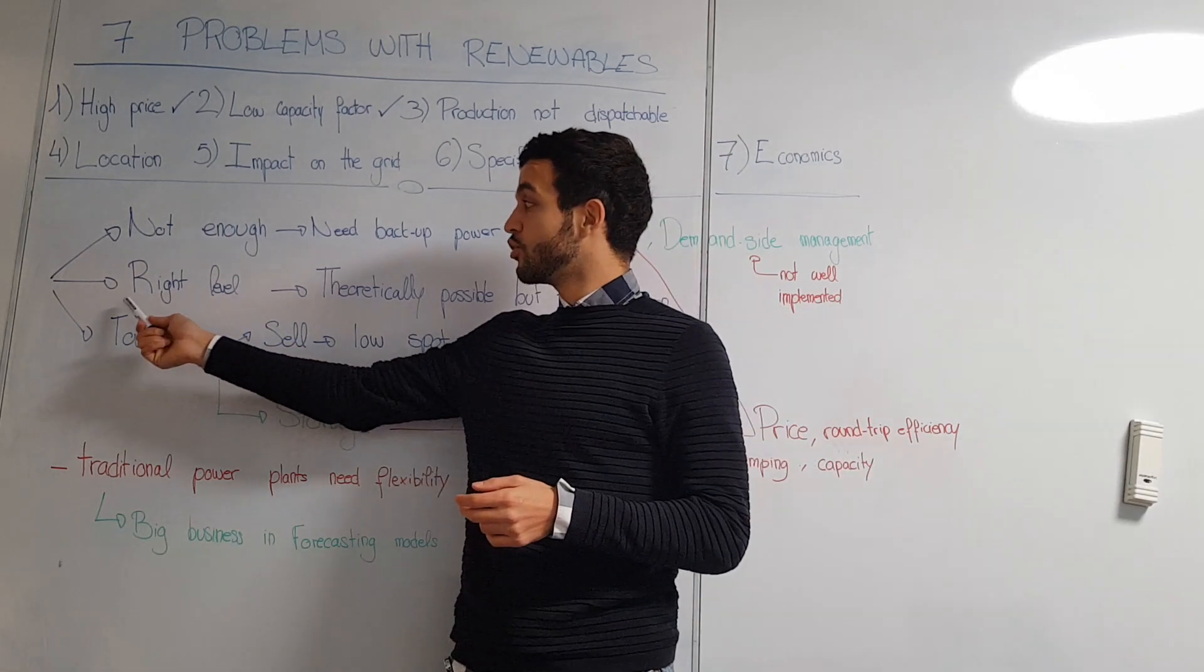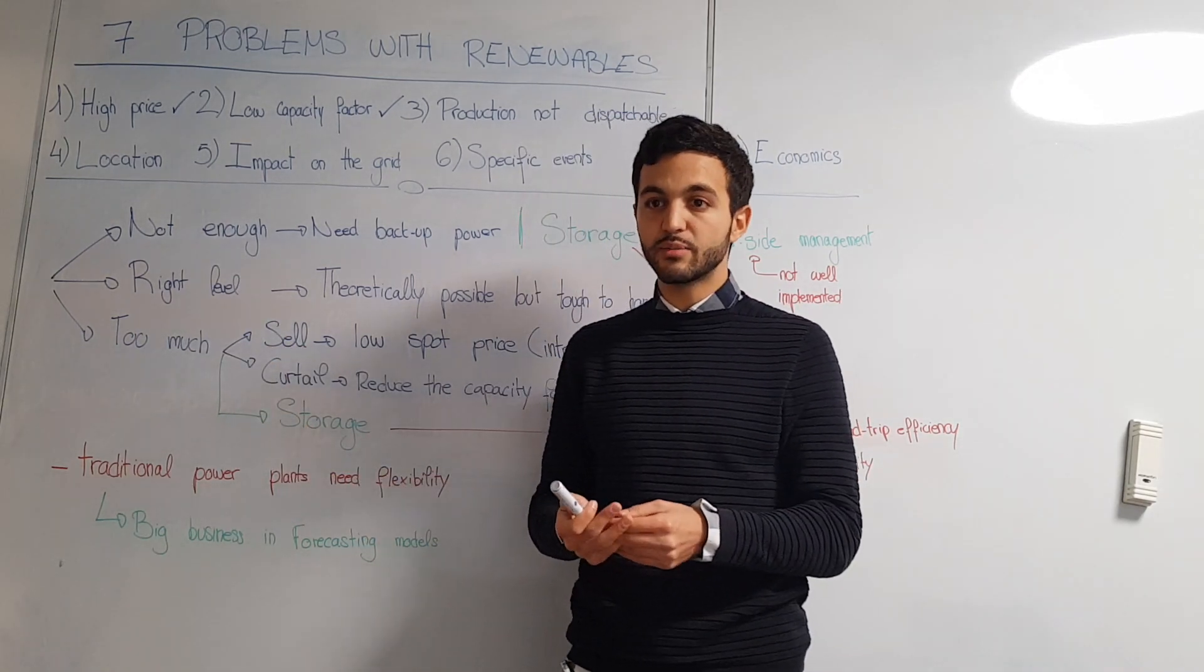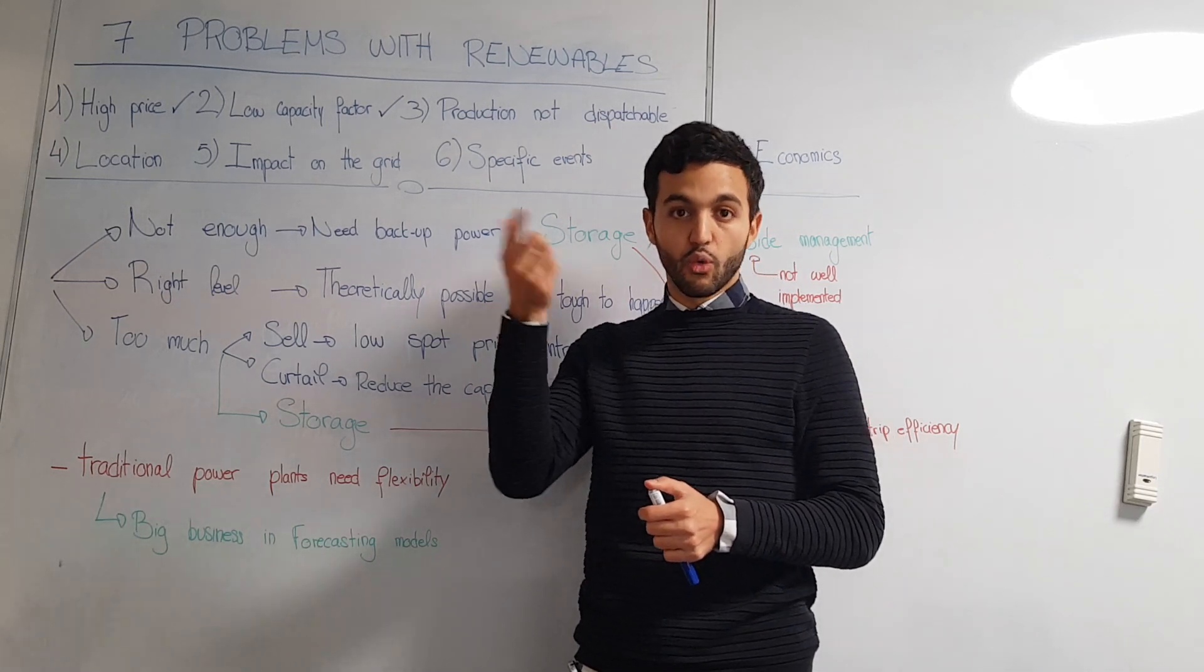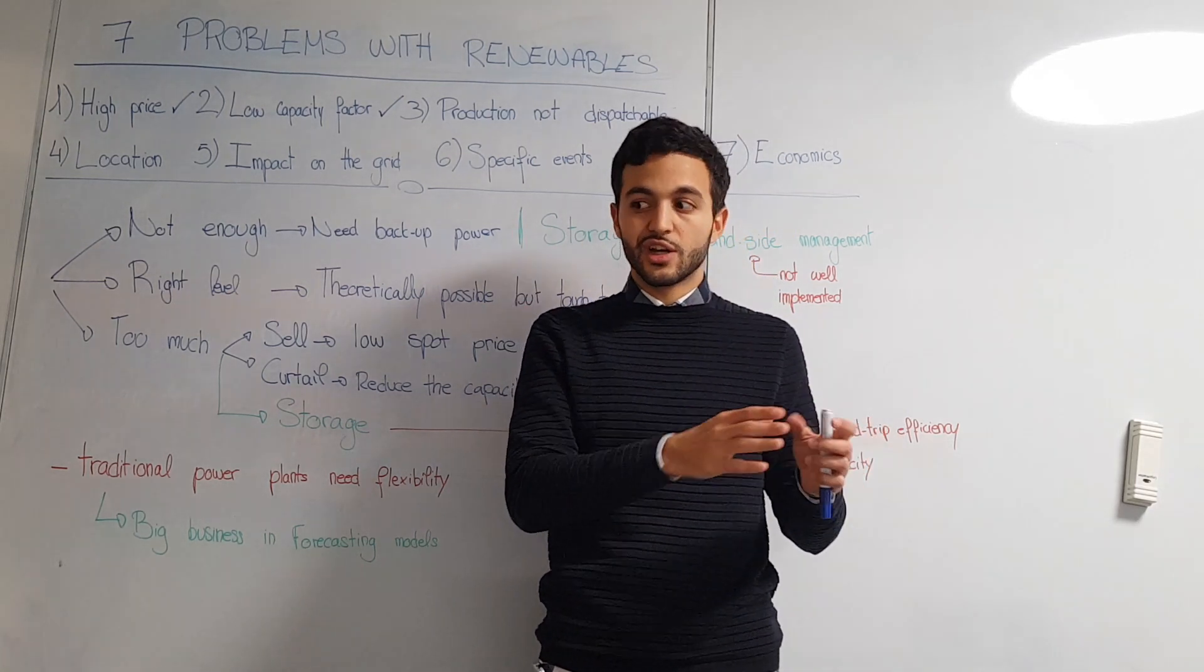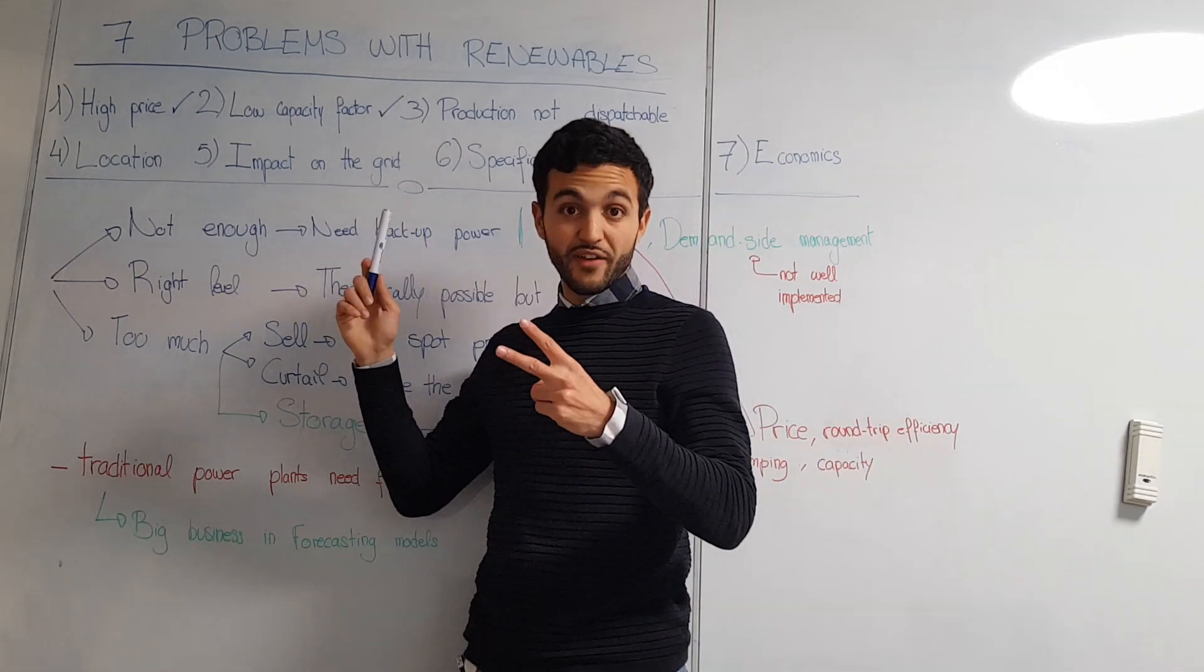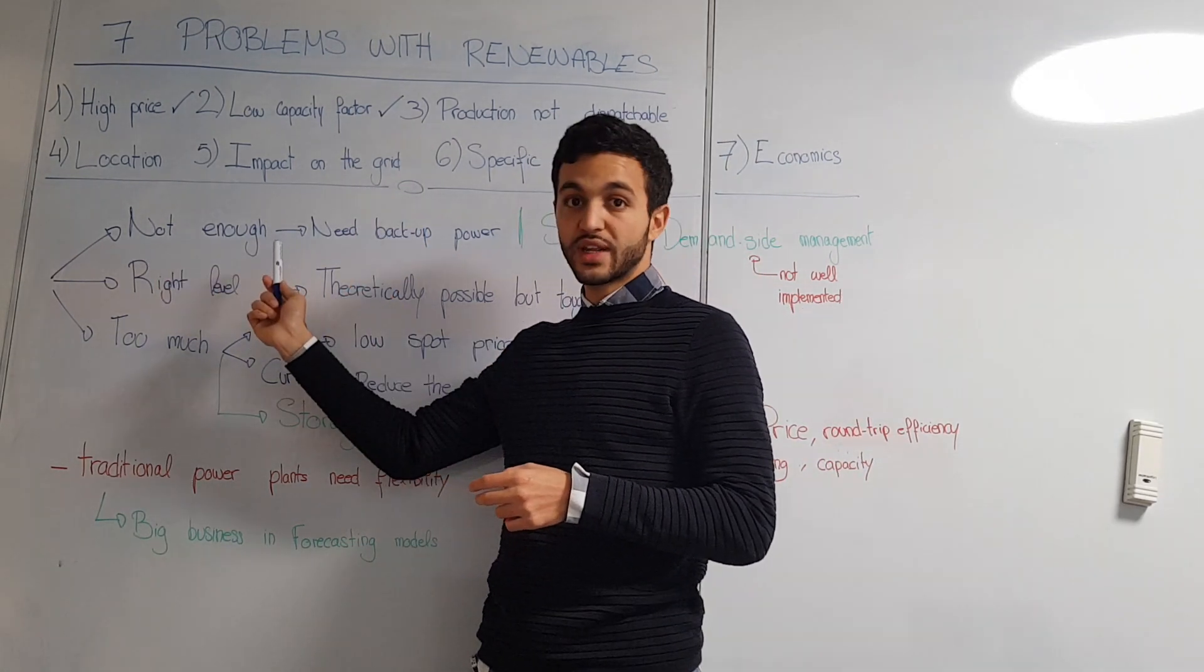This leads us to three possibilities. The first one is you are producing at the right level. In theory this is possible, but in real life it would mean you have a perfect correlation between weather and consumption. So this cannot happen. Then you have two scenarios - either you are not producing enough.